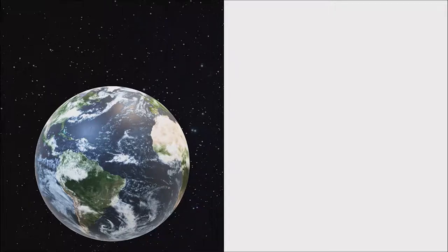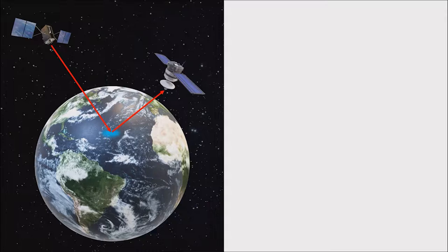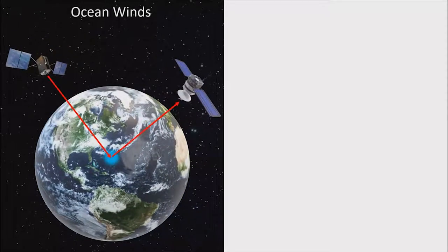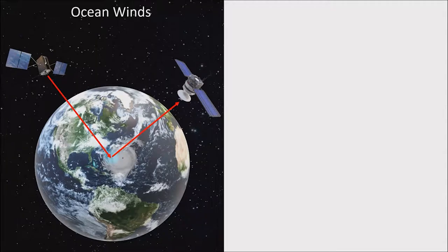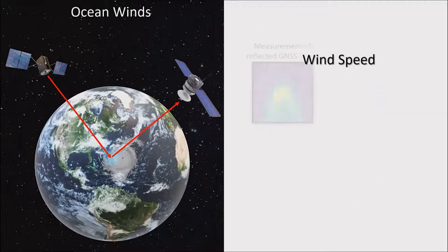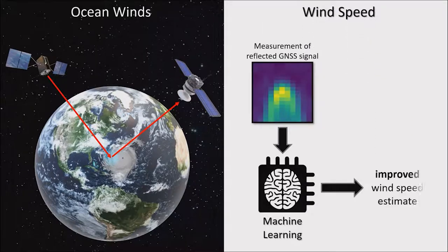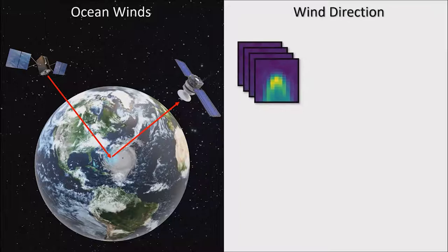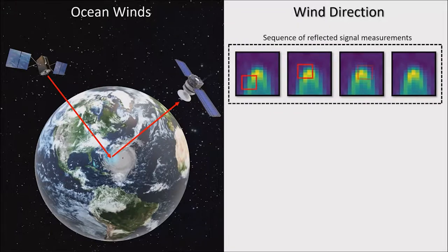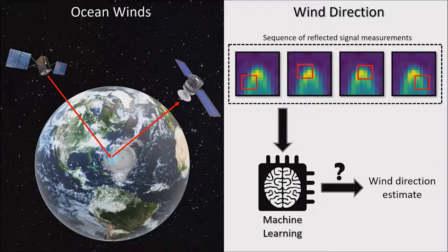GNSS signals reflected from Earth are imprinted with the signatures of the changing surface conditions. The Sense Lab is using this technique, called GNSS reflectometry, to perform remote sensing. One application is measuring ocean surface winds, such as in hurricanes. The distortions of the reflected signal are related to wind speed and direction. We've used machine learning to improve wind speed retrieval. Wind direction retrieval is trickier. We're working on a way to extract information from a sequence of measurements, and again using machine learning for the retrieval.